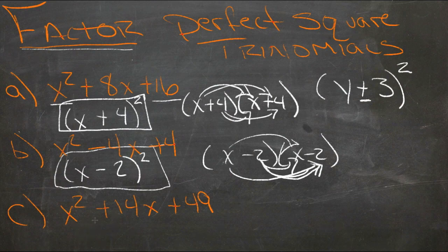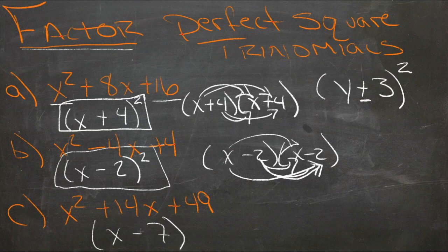And then the last one, we'd have x and 7, and everything's positive. So we'd have (x + 7)².